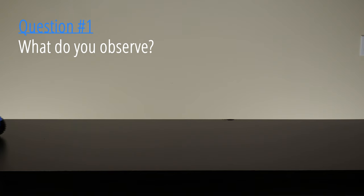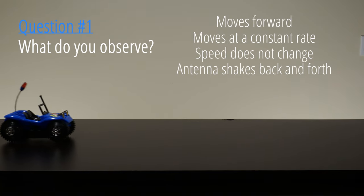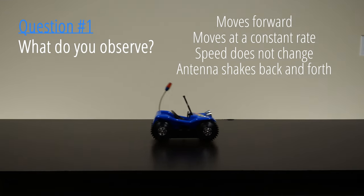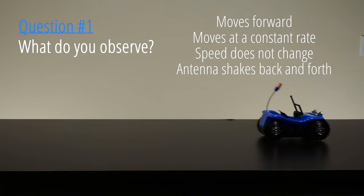To begin this lab, start by demonstrating the motion of the toy car and ask students what they observe. Record students' observations on the board. You want the class to recognize that the car is moving at a constant speed in a straight line.